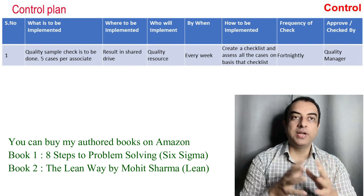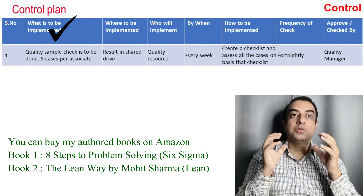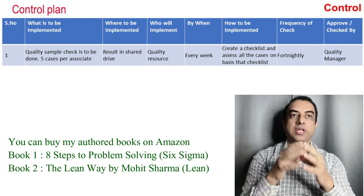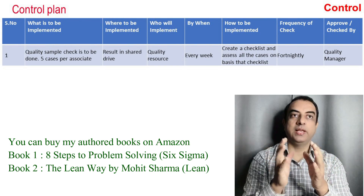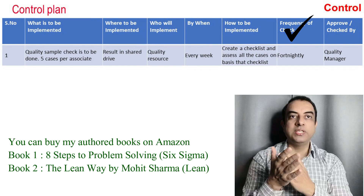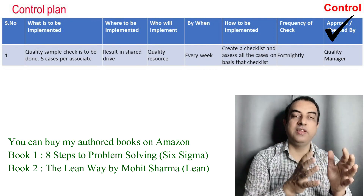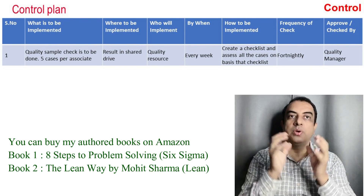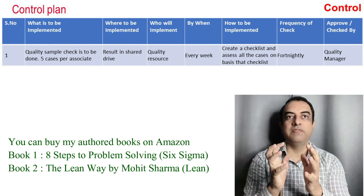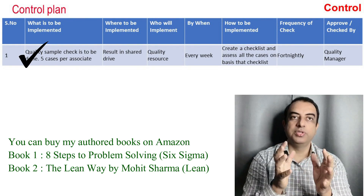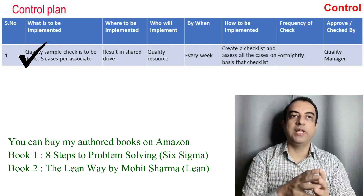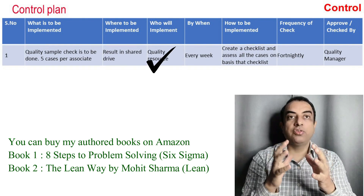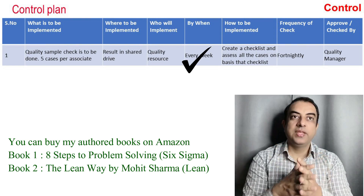In the Control phase, it is really important to control the improved state of the process — what is to be implemented, by when, where, who, and how. We need to control this implementation by checking at a definite frequency, and a supervisor or senior person in the organization should verify whether the activity is happening. For example, to control a process improved on accuracy levels, a quality sample check is proposed: five cases per associate to be done every week.